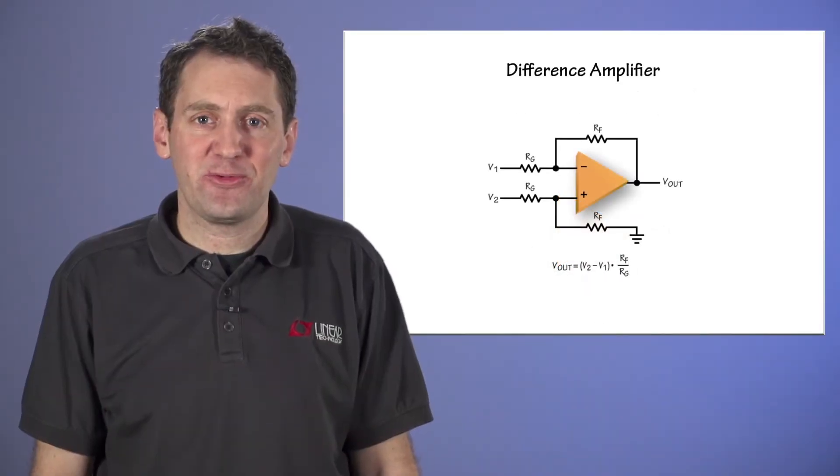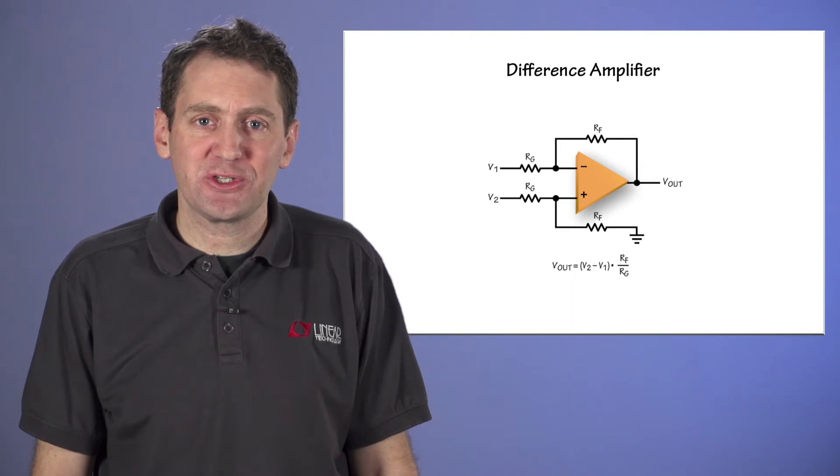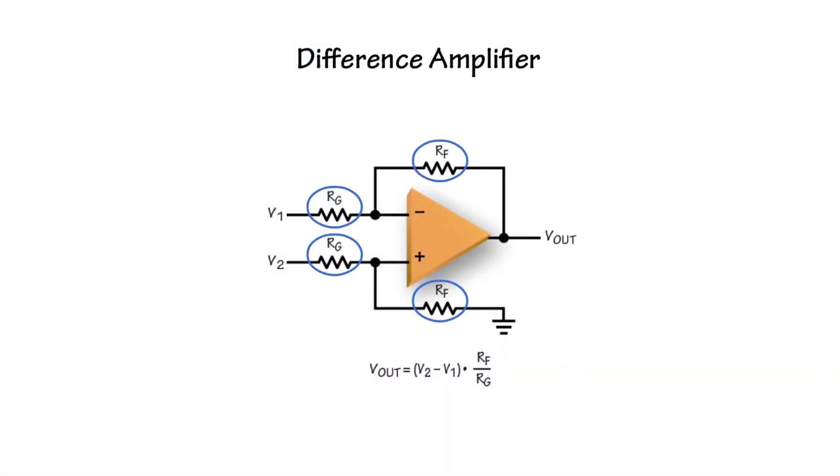A difference amplifier configuration is a superposition of the inverting and non-inverting circuits. We now have four feedback resistors, and the output voltage is a function of just the difference between the two inputs, regardless of the absolute value of any input taken on its own.